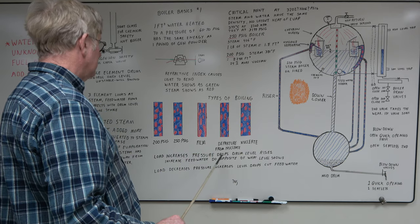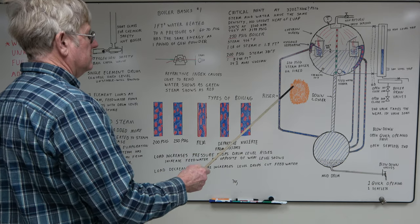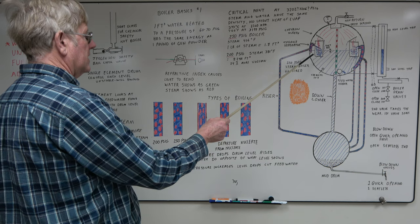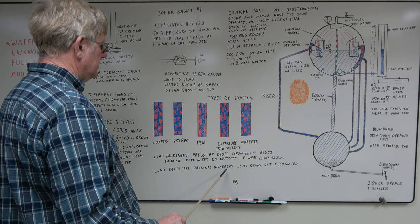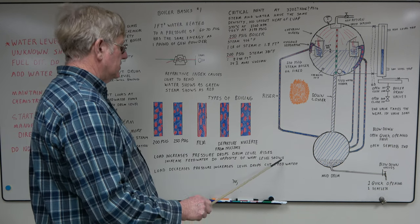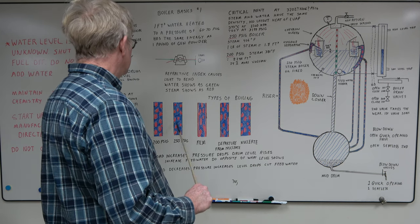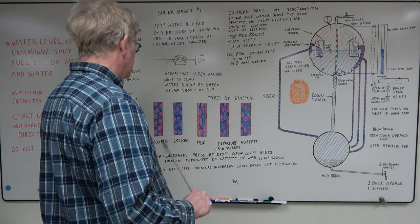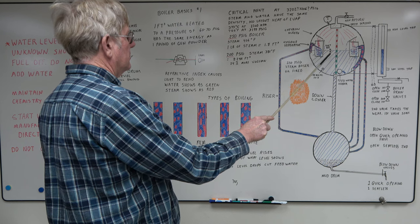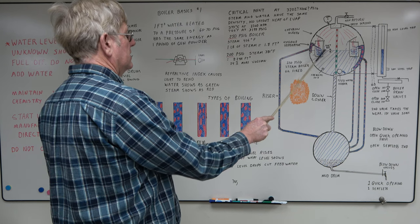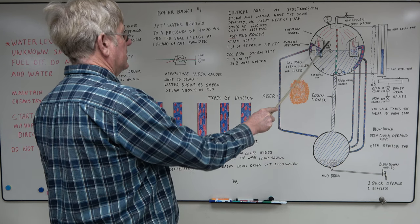The opposite occurs if you drop load. Let's say somebody shuts a valve, loses a piece of equipment. Steam flow drops, your pressure comes up. Load decreases, the pressure increases and the level drops. Your steam bubbles become smaller, they get squeezed. At this point, your drum level is going to drop. Your feed water valve is going to try to open or you're going to try to put more water in and we get back to normal. Now the pressure comes back, now it's going to be high.